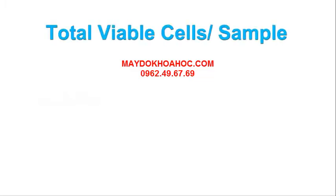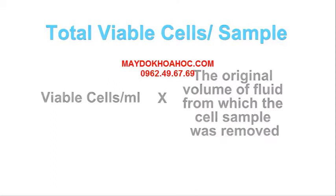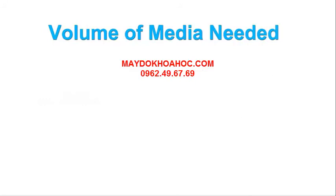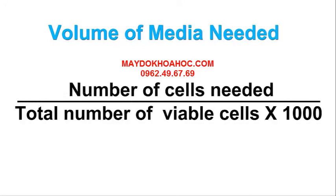Total viable cells per sample is equal to viable cells per milliliter multiplied by the original volume of fluid from which the cell sample was removed. Volume of media needed is equal to number of cells needed divided by total number of viable cells, into 1000.